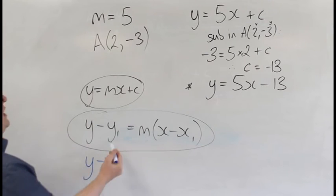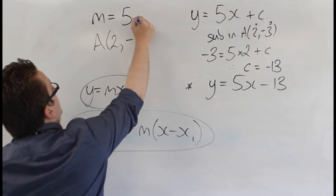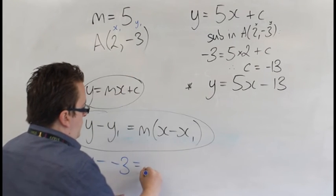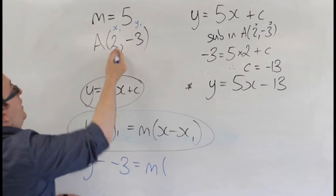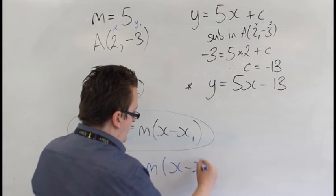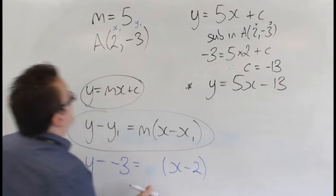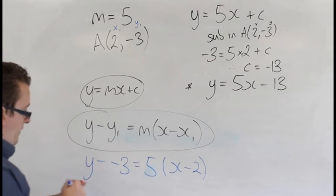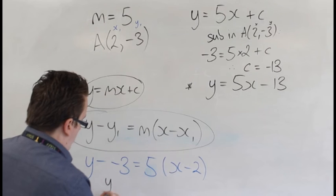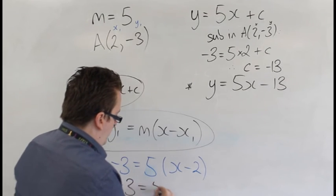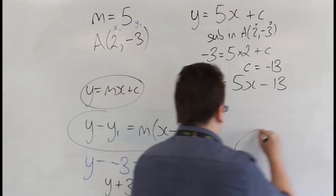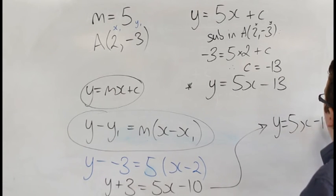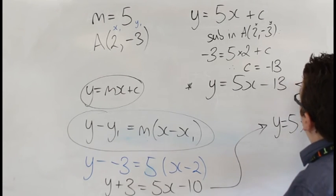So, you can write it as y take away y1, so this is your y1, that's your x1, so y take away minus 3 is equal to m lots of x take away your x1, so x take away 2 in this case, our m, sorry, is 5. Then you can multiply this out, so we have y plus 3 is equal to 5x take away 10, which means that we have y is equal to 5x minus 13, which is exactly the same as what we had there.